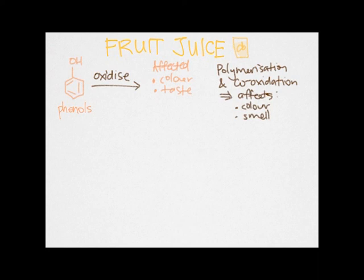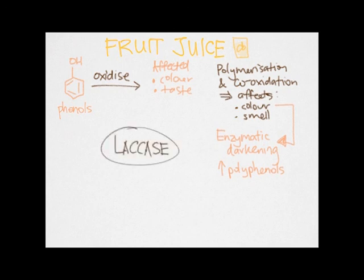The natural polymerization and co-oxidation reaction of phenols and polyphenols over time result in undesirable changes in color and smell. The color change, referred to as enzymatic darkening, increases due to a higher concentration of polyphenols naturally present in fruit juices. Treatment with laccase causes the removal of phenols with higher efficiency compared to other methods like activated coals. The substrate enzyme complex is then removed from the juice via membrane filtration.